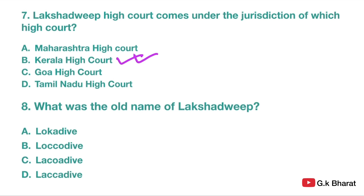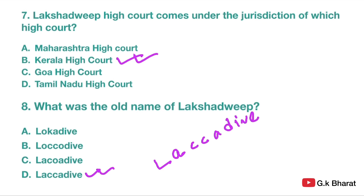Next. What was the old name of Lakshadweep? Option A: Locodip. Option B: Locodip. Option C: Locodip. Option D: Lakodip. Your correct answer is option D — Lakodip. Here you have to look at the spelling carefully. The spelling is L-A-C-C-A-D-I-V-E. Lakodip is the old name of Lakshadweep.